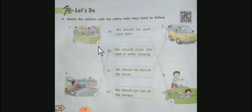This is unsafe and is matched with D: We should not run on the terrace because we may fall from the terrace while running.